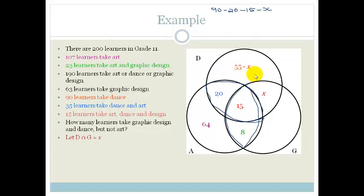And now we can use information about the graphic design, and we can say 63 kids take graphic design. That means this whole right circle should add up to 63. So therefore, this little bit here is going to be 63 minus 15 minus 8 minus X. So that works out to be 40 minus X.